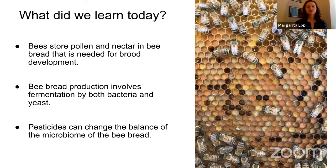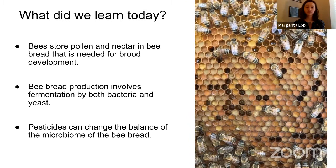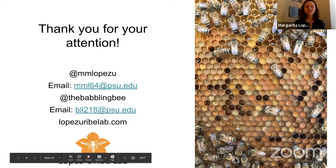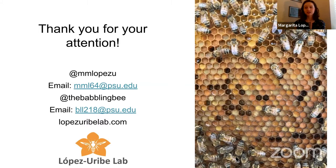To wrap up what we learned today: bees store pollen and nectar in the form of bee bread, which is very important for the development of the brood and the overall success of the colony. Bee bread is not only produced by the presence of pollen and nectar, but also by the fermentation process driven by bacteria and yeast. Finally, we found that pesticides — both from the environment and introduced by beekeepers — can change the balance of species in the microbiome of the bee bread. Thank you for your attention. If you have questions, our Twitter handles and emails are shown here, or visit our lab website.